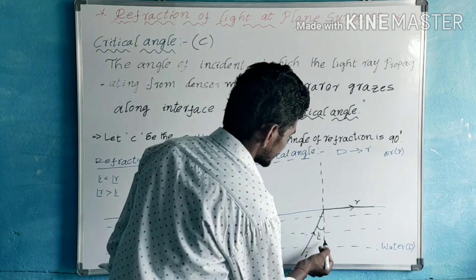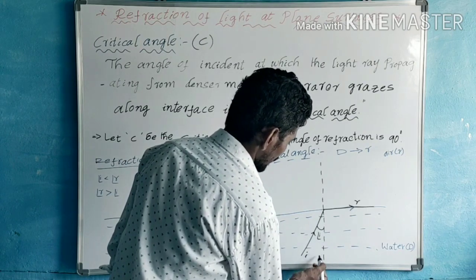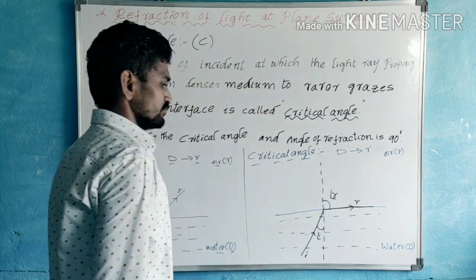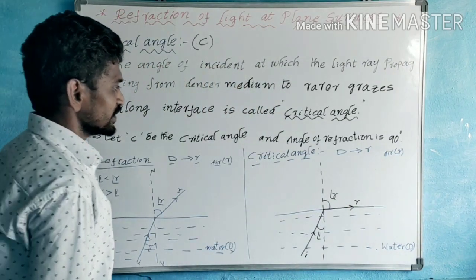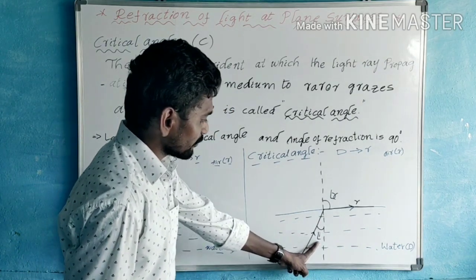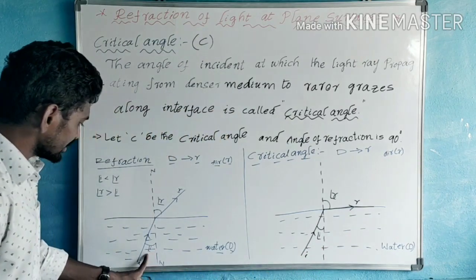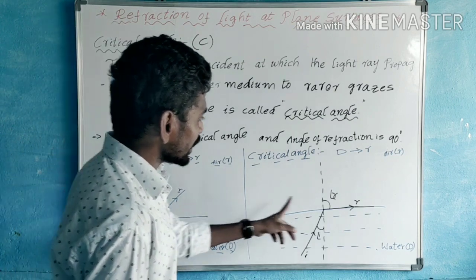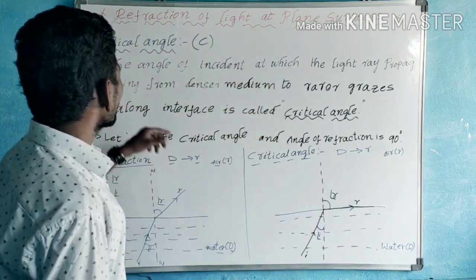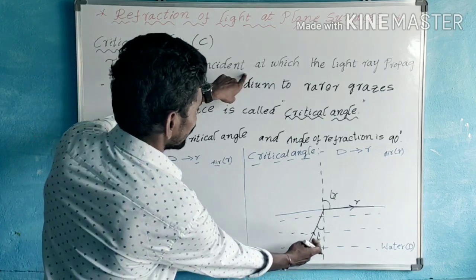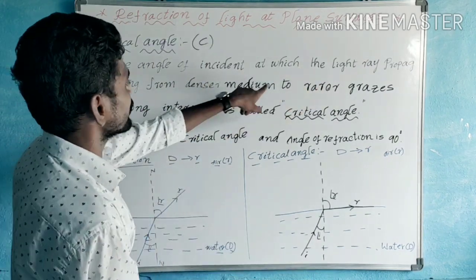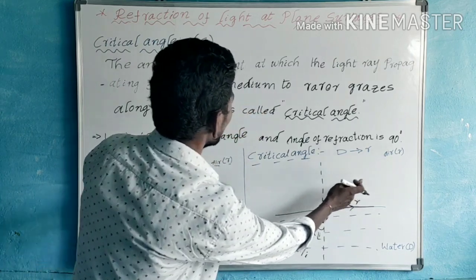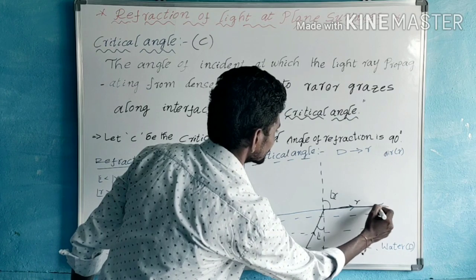The angle between the normal and the incident ray is the angle of incidence. The angle between the normal and the refracted ray is the angle of refraction. Here, when the refracted ray grazes along the interface, the angle of refraction is 90 degrees. The angle of incidence at this point — where the refracted ray grazes along the interface — is called the critical angle. This is the interface where the air medium and water medium divide.